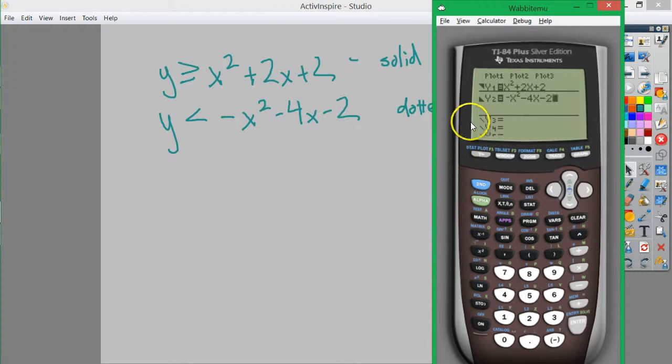And then I'll go over and do negative x squared minus 4x minus 2. Now, the point I'm looking for is where they both graph sort of over top of each other.